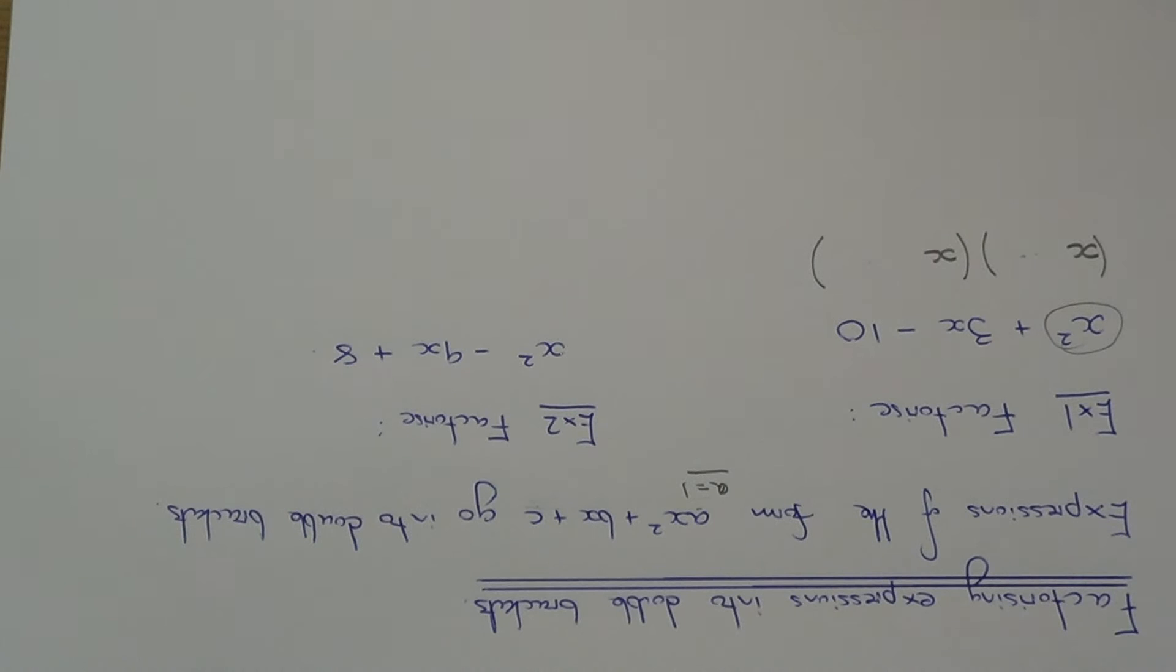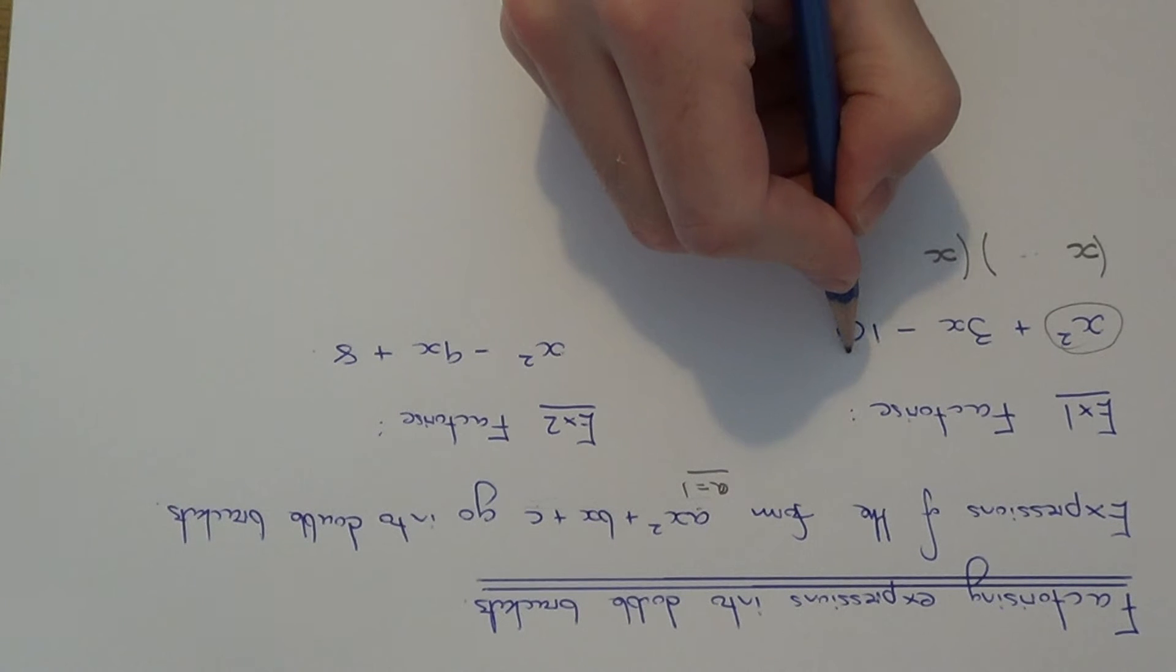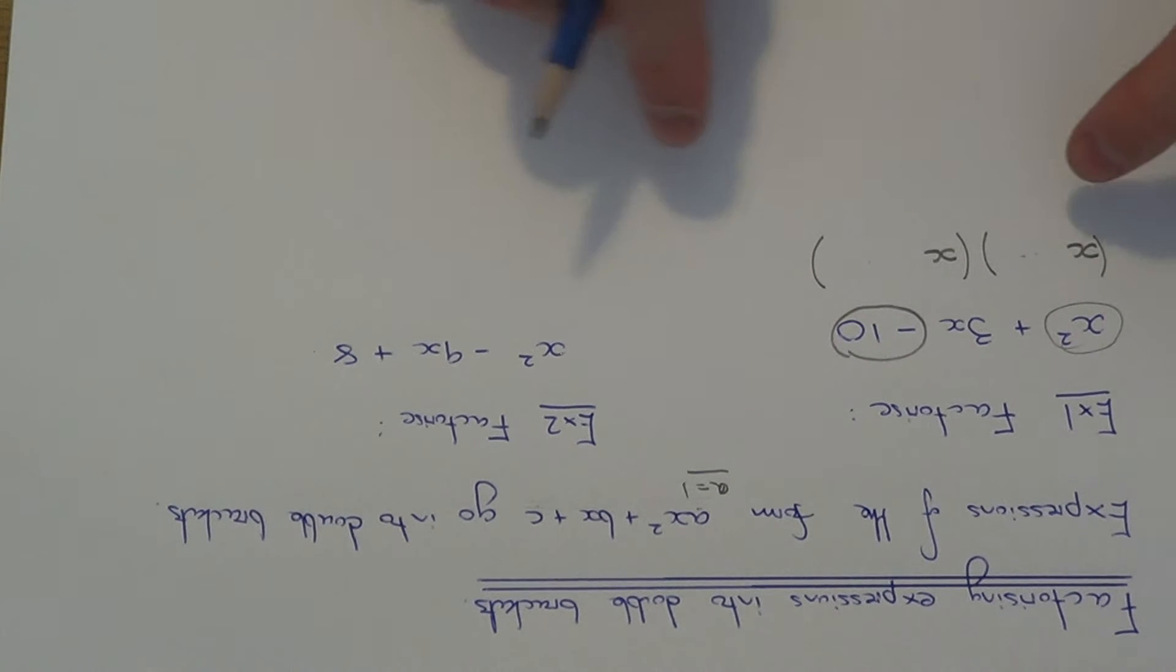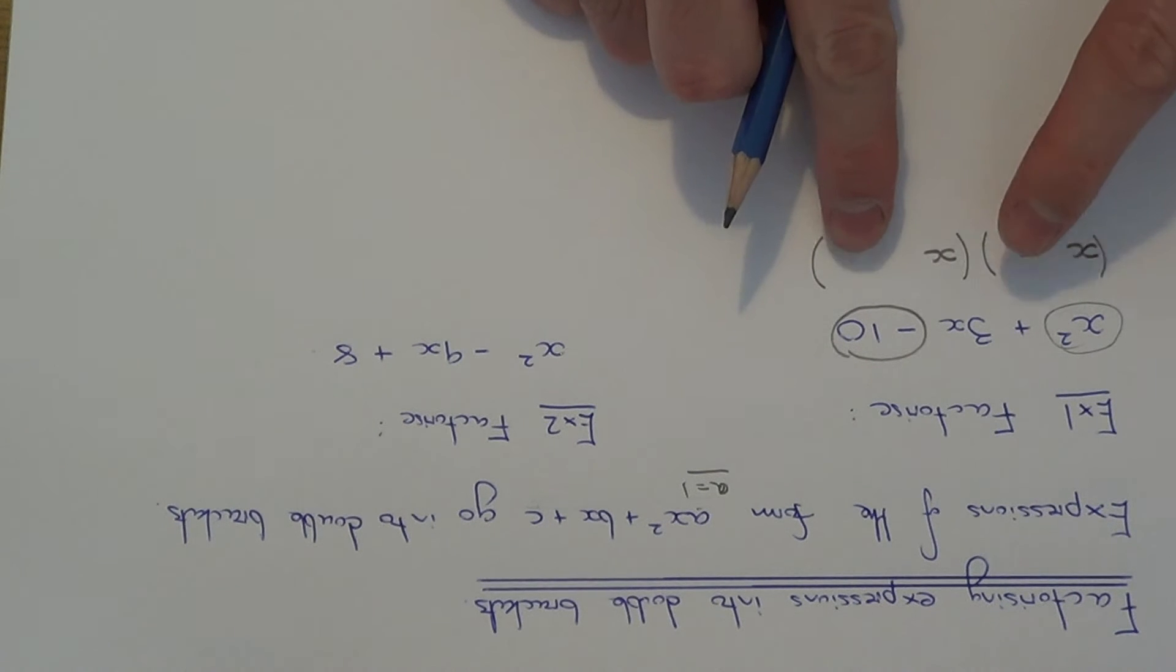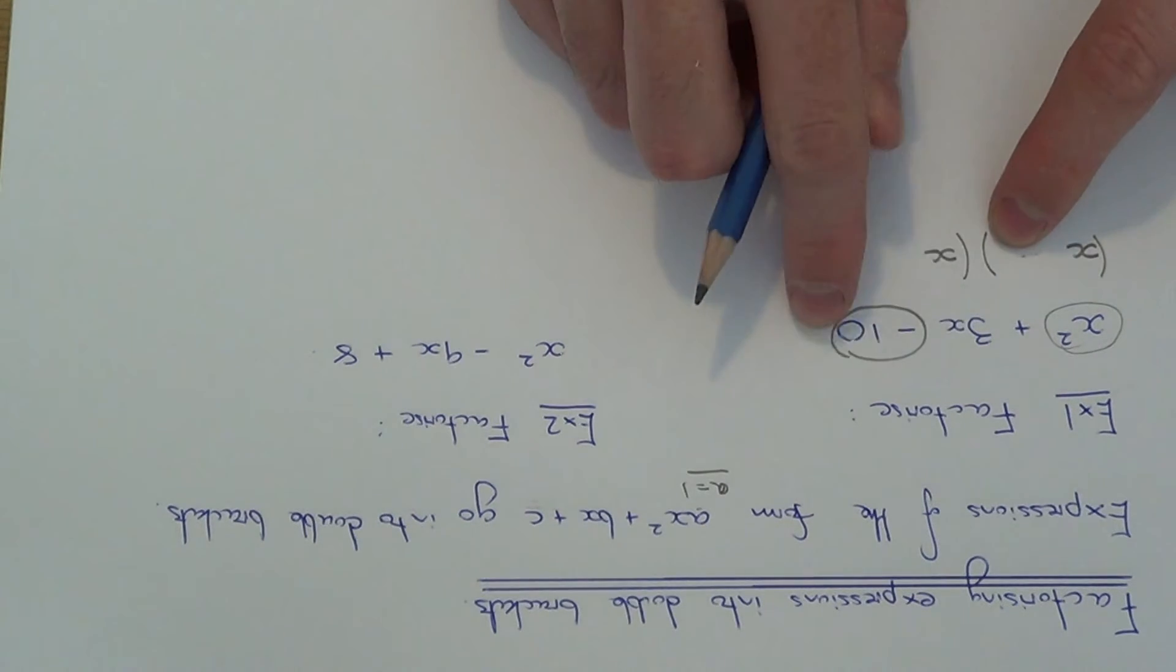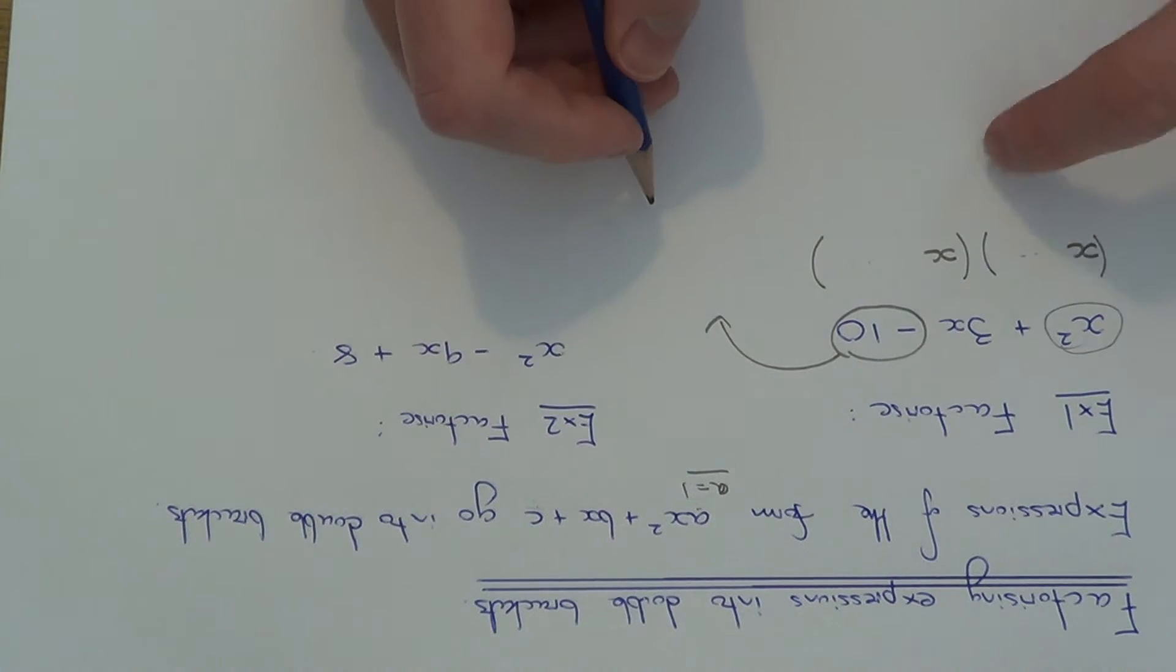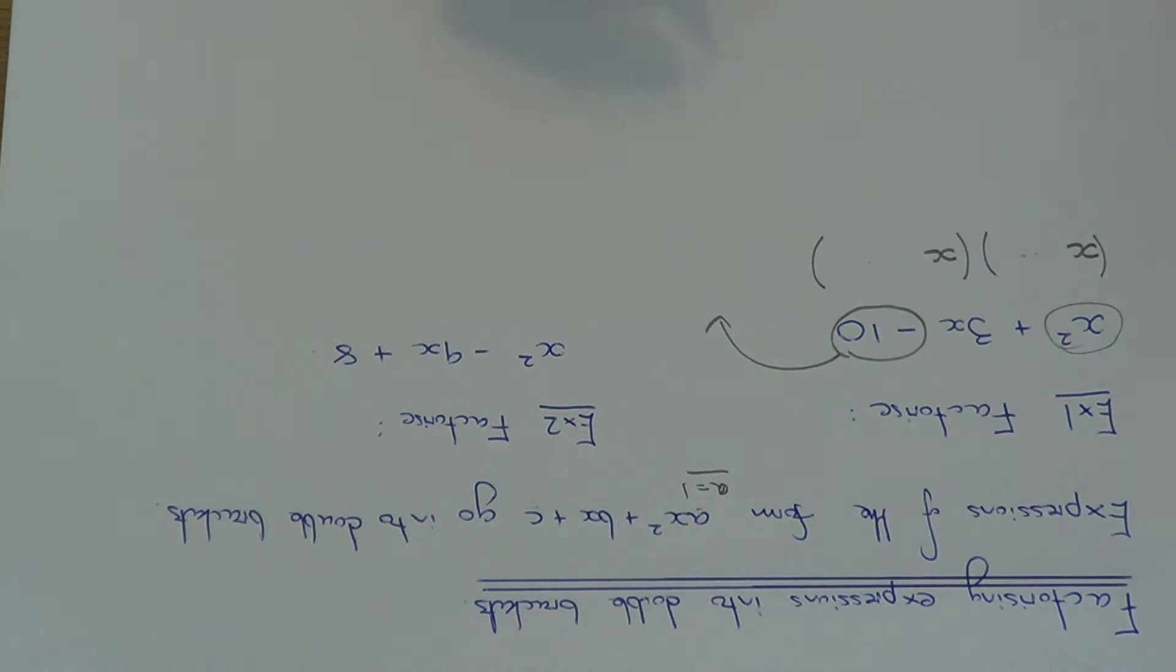And the way you do this is to look at your last number in your expression which is minus 10. And we know that the numbers in the brackets, the last numbers in each bracket, multiply to give us minus 10. So I'm just going to write down all the factors of minus 10 on the side of my page.